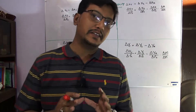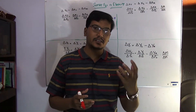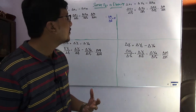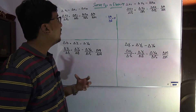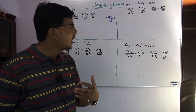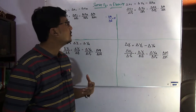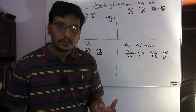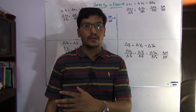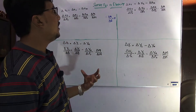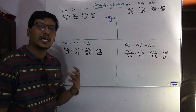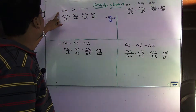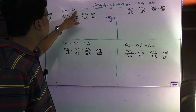We have discussed the different points of view of the Slutsky equation — first the graphical representation, then the four possible Slutsky equations derived in the last lecture. Now we are observing another view: the Slutsky equation can also be derived in the form of elasticities. The decomposition of the total effect equals the substitution effect minus the income effect.